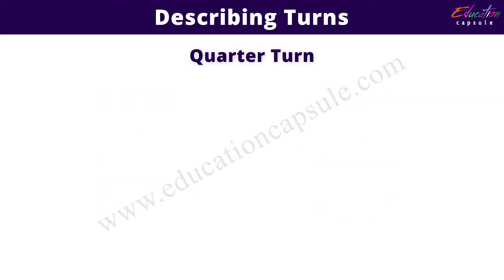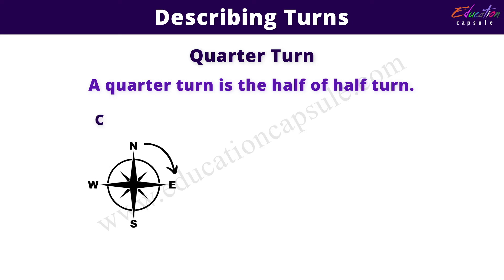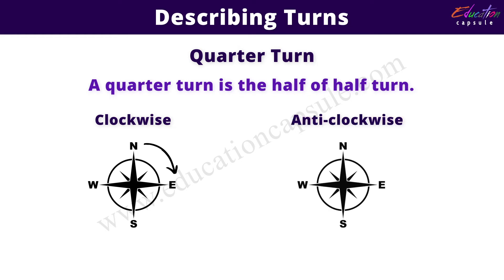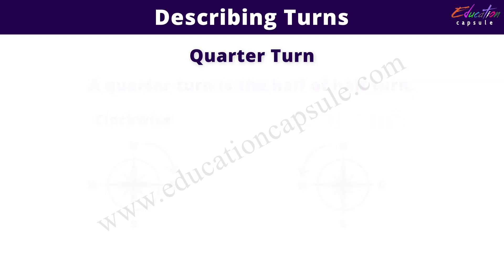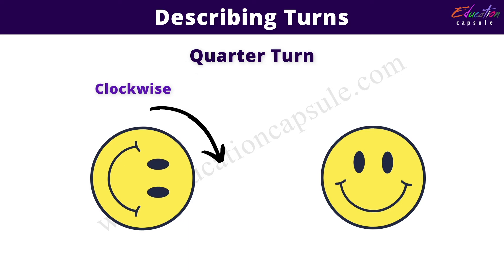Next is a quarter turn. A quarter turn is the half of a half turn. Quarter turn will be from north to east when turning clockwise. In an anticlockwise direction, the quarter turn will be from north to west. As you can see here, if this is the starting position of the smiley, then these will be the respective positions after its clockwise turn and anticlockwise turn.